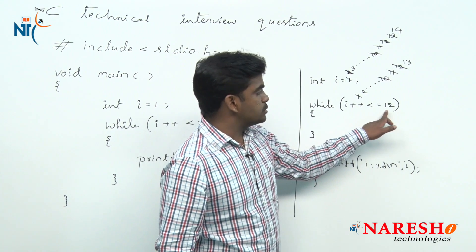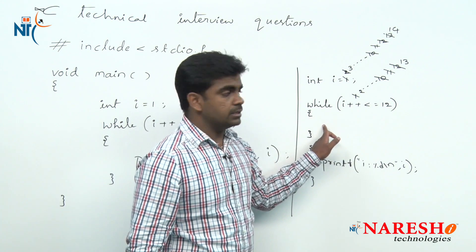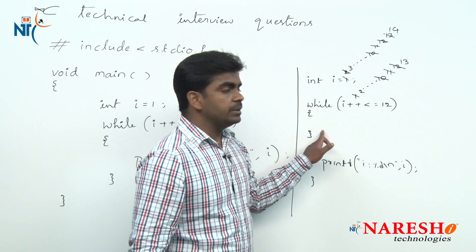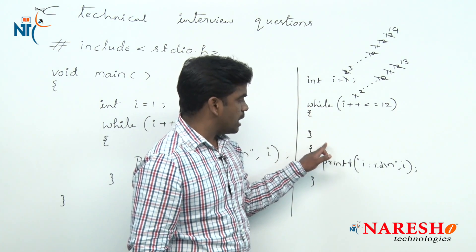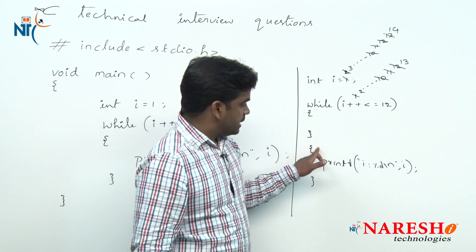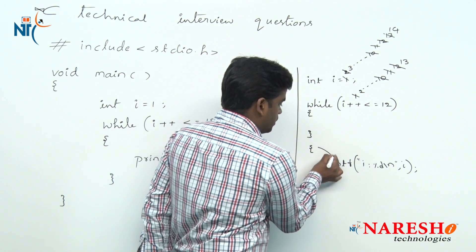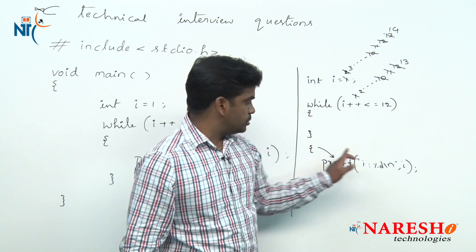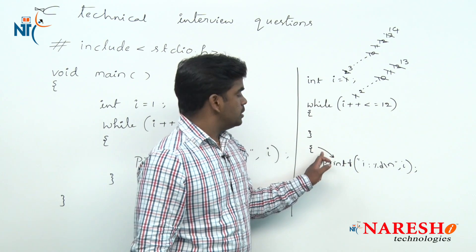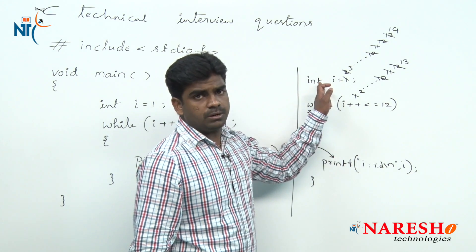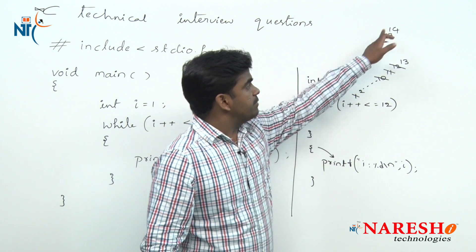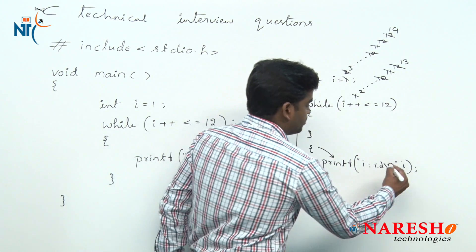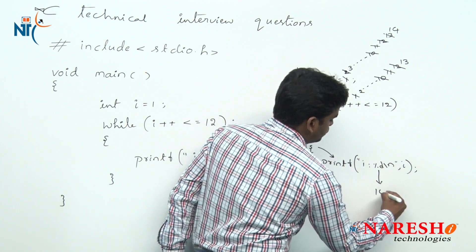So this while loop will be terminated. Next the control come out of that and now it will enter into that empty block. Here whenever we are looking for i value as a local variable, i is not there. So it is looking for method level, nothing but function level i variable. i value is there, 14.